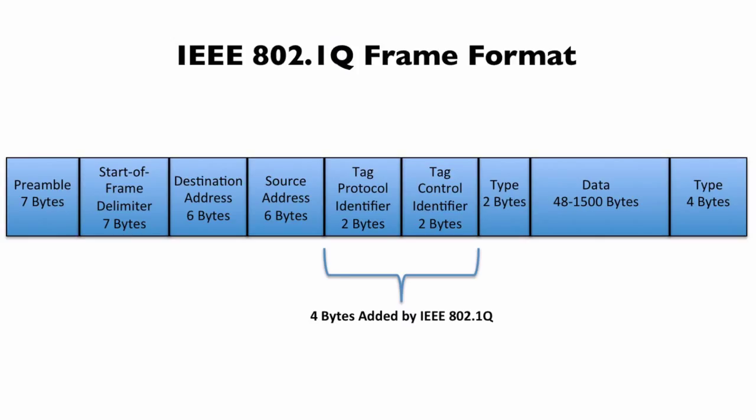An 802.1Q frame can add four bytes, four tag bytes, to our regular ethernet frame.